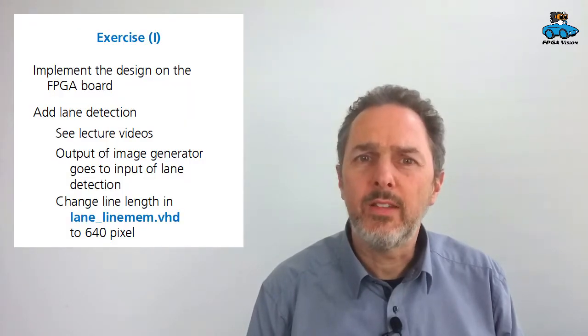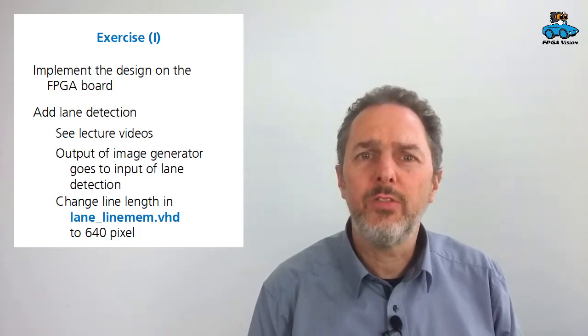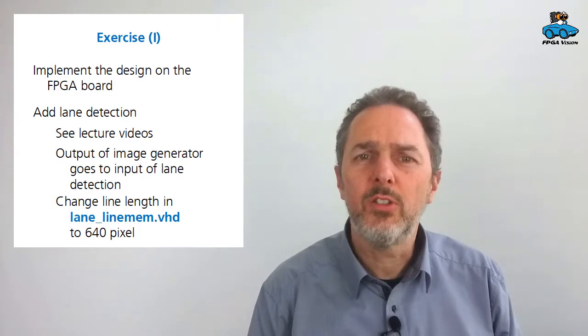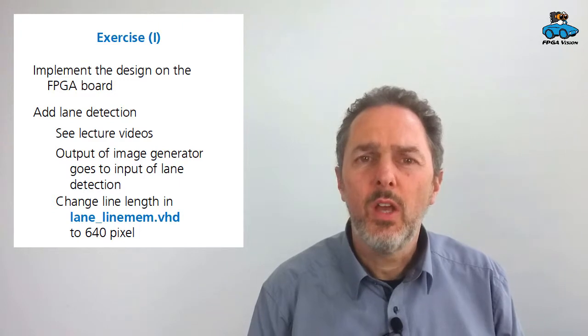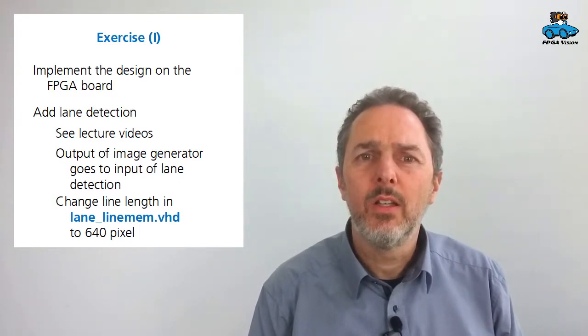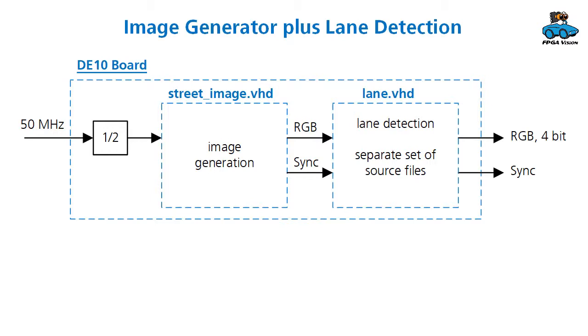You find the source code for the image generator on our website, and you can implement it in your lab on your FPGA board and try it out. So what are the exercises you can do with this setup? First thing is you can add the lane detection. You find the information about it in our lecture videos, and you find also the source code on the website. You can add this functionality to your FPGA. The only thing you have to do is to change the line length for the line memories to 640 pixels, because the original design is for 1280 pixels.